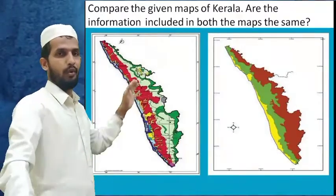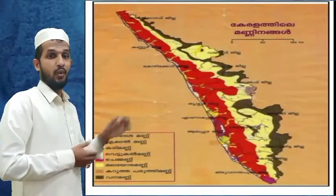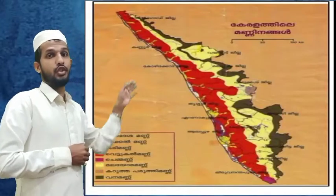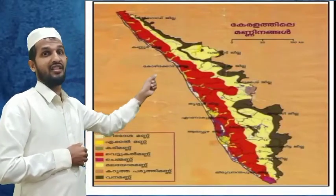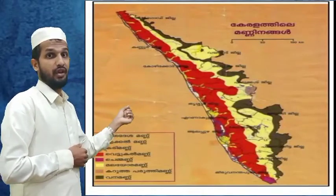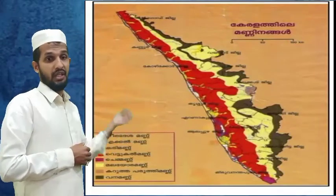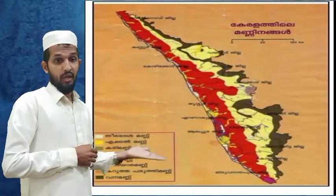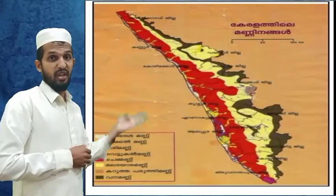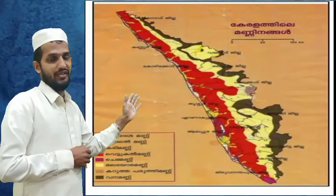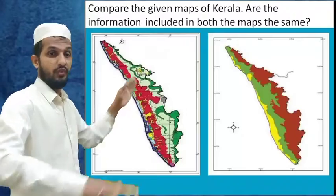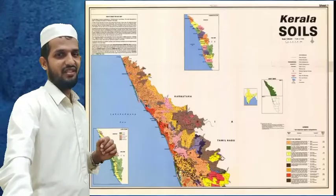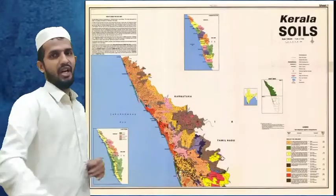What do the differences in the Kerala maps denote? The first picture shows the soil types of Kerala. We can see so many soil types: coastal soil, laterite soil, black soil, red soil, alluvial soil, and forest soil, among others. So the first picture shows about the soil types of Kerala.